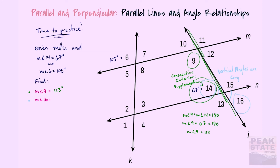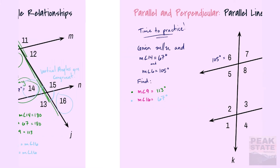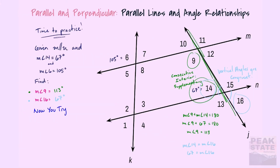Looking at angle sixteen, this takes us back to some geometry basics — those are vertical angles, and vertical angles are congruent. Therefore, the measurement of angle sixteen is also 67 degrees. Practice a couple more of these on your own and make sure you're in peak state as you're doing it. Good luck!